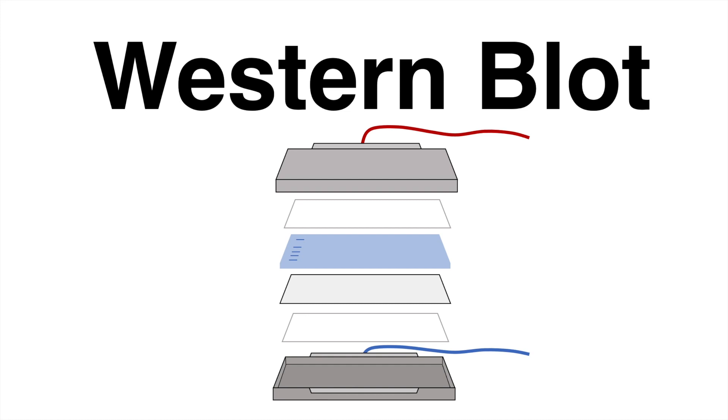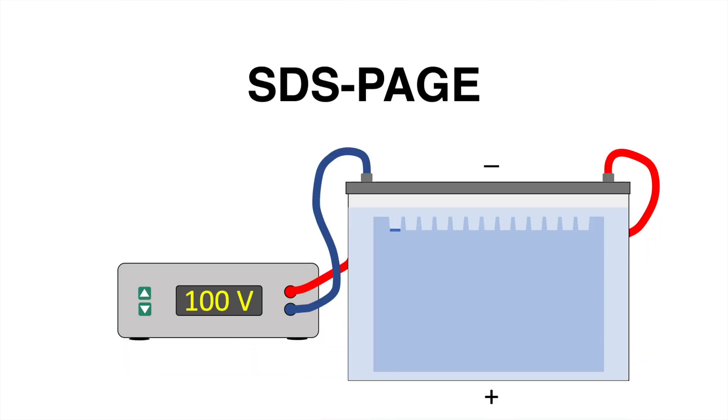Before the analytical technique western blot comes into play, everything starts with an SDS page. Upon treatment with SDS, all proteins in a sample are denatured and covered by negative charges. The proteins have a similar mass-to-charge ratio and travel through the gel to the positively charged anode. This allows to separate proteins according to their molecular weight.